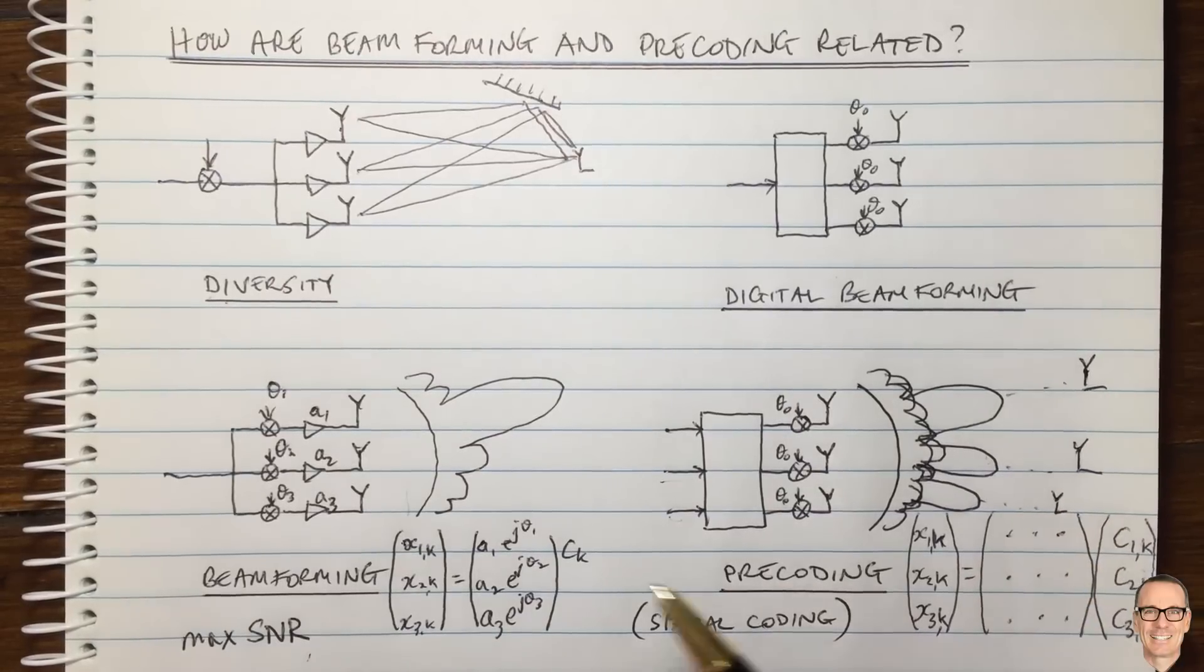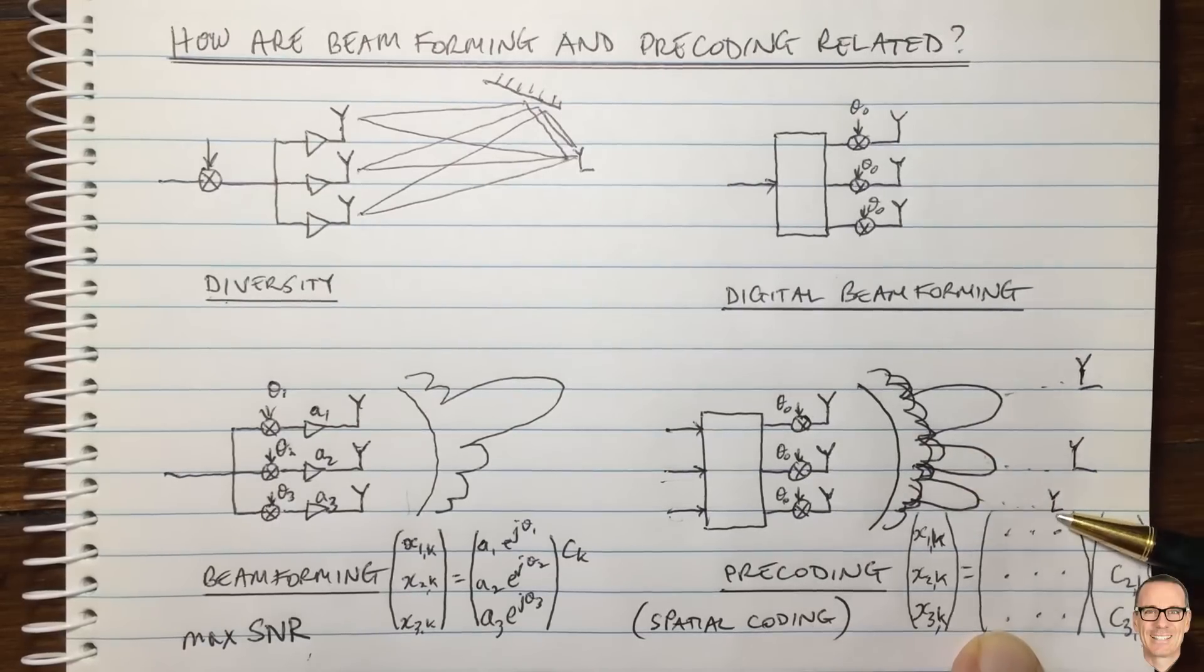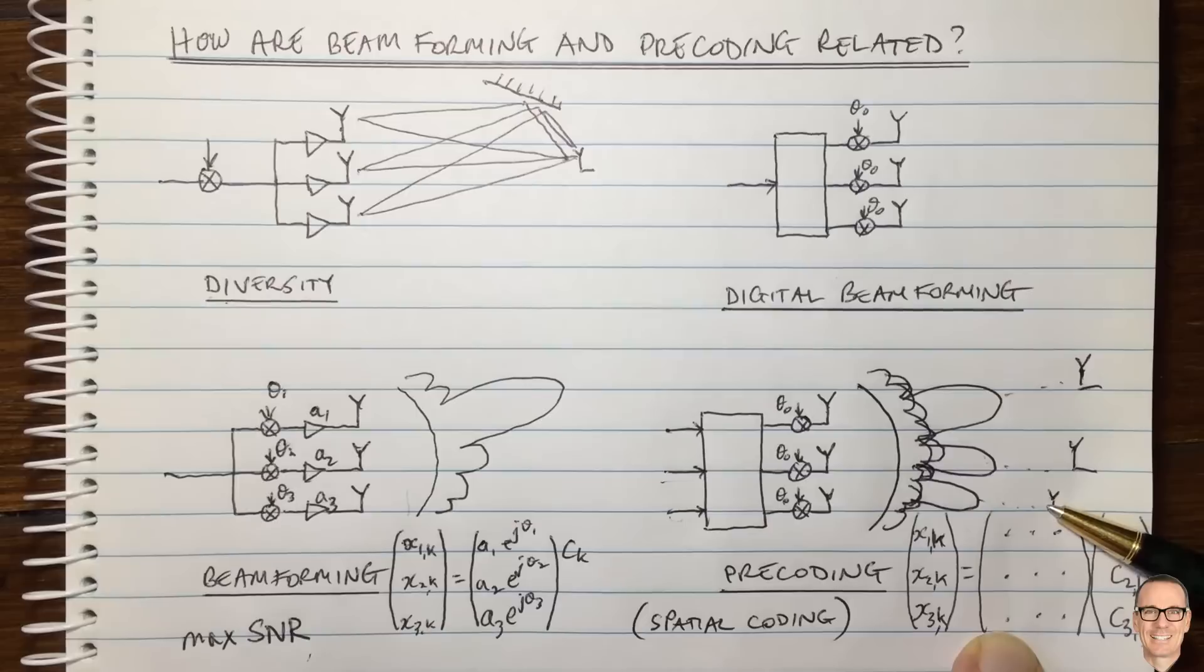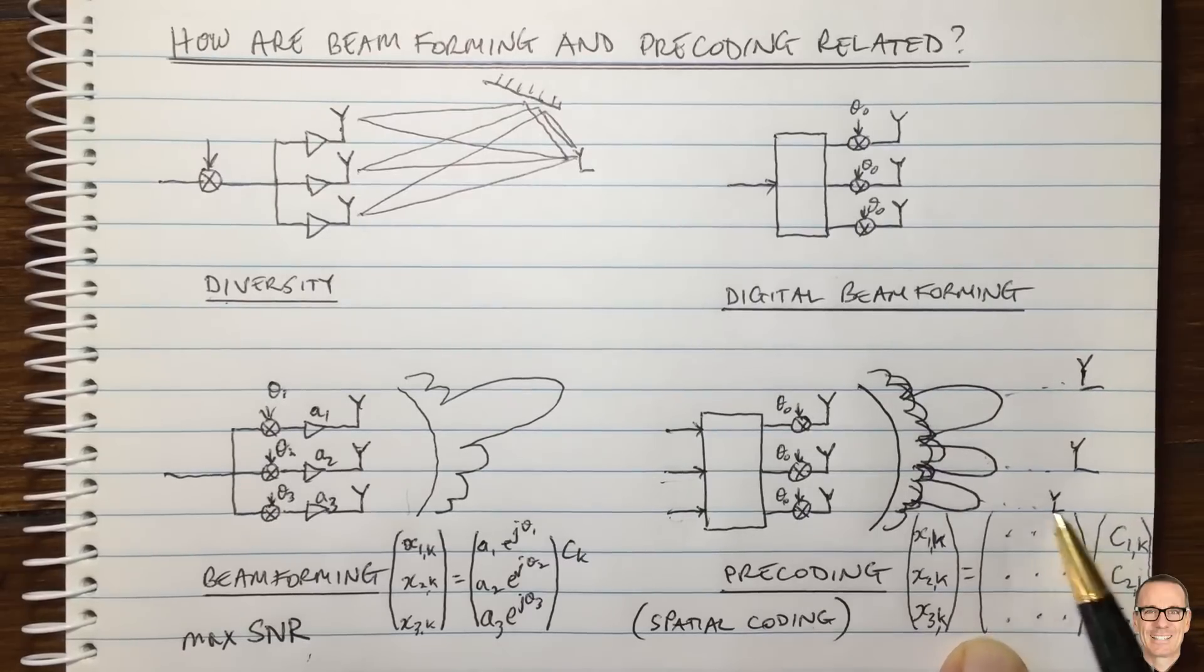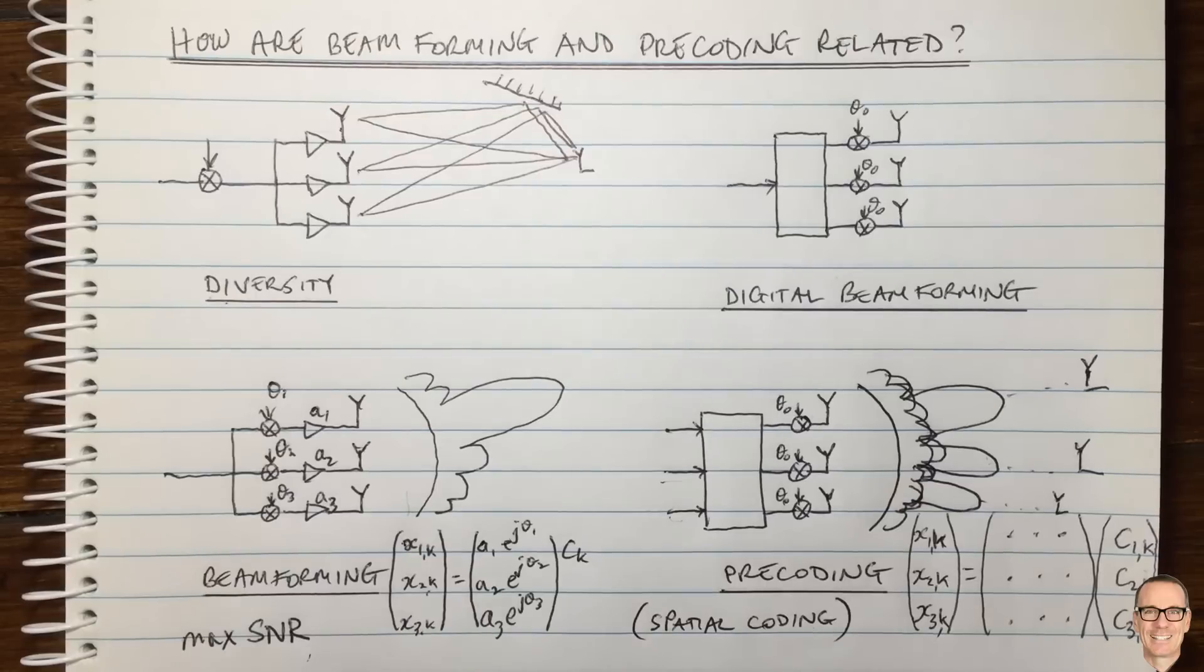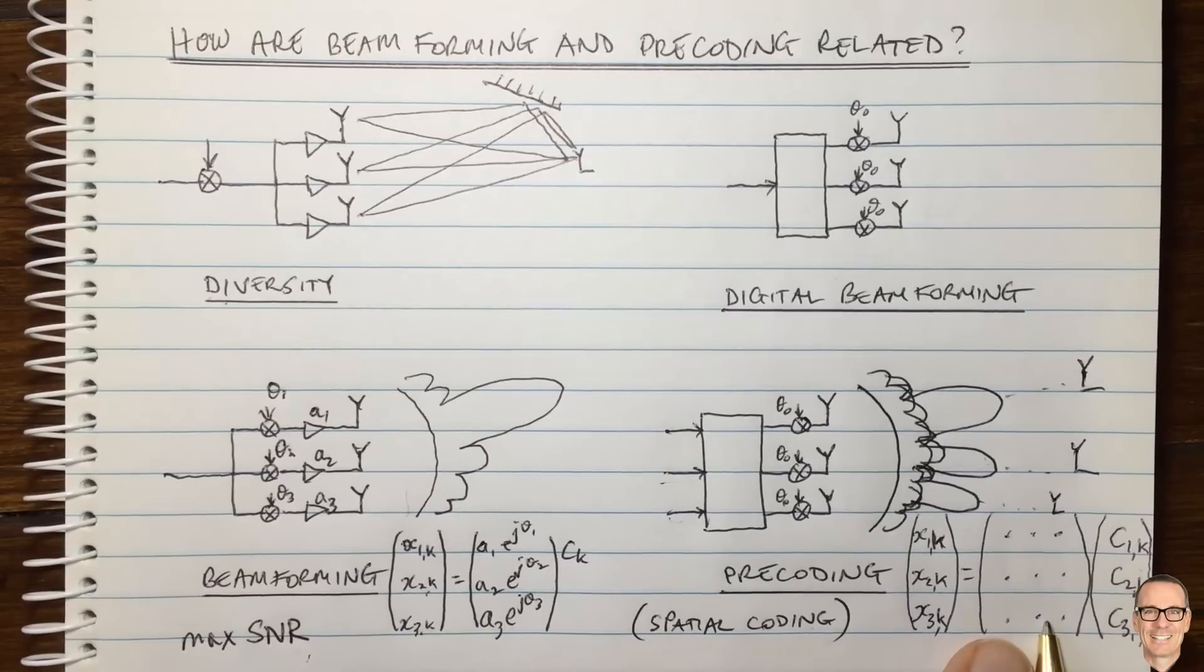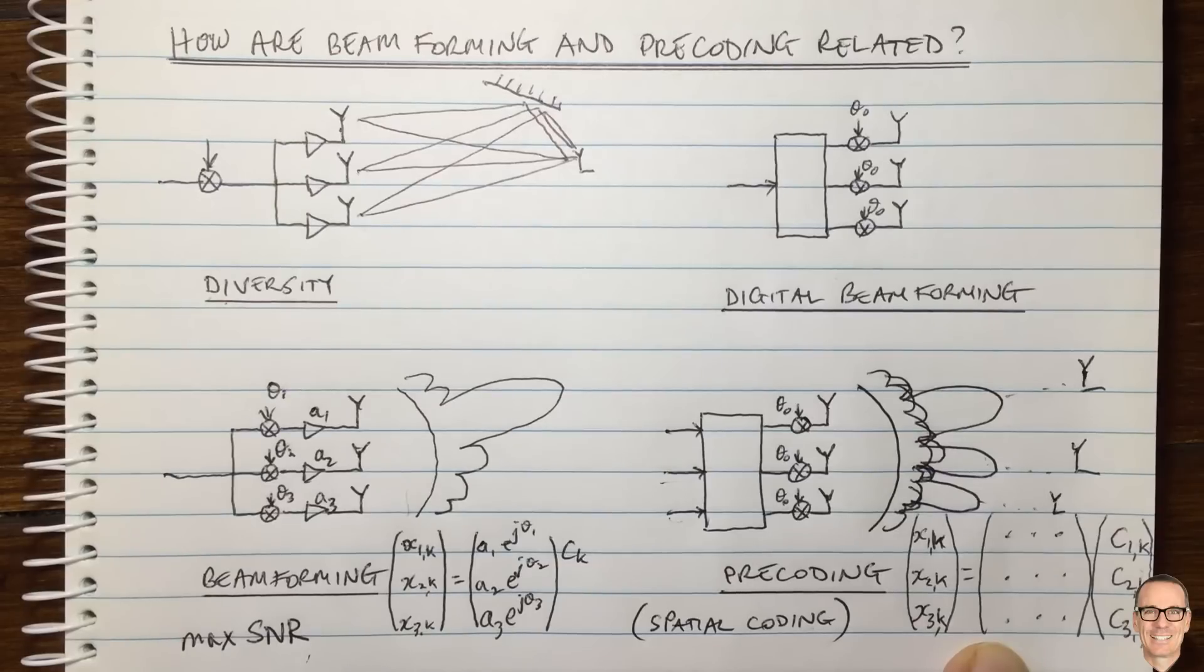You could choose this matrix so that nulls were steered in the directions of the other users for each stream. So this first column, instead of choosing it to maximize the SNR for beamforming, you could choose this first column so that it arranged nulls for stream one in the direction of the other two receivers. It wouldn't be maximizing the SNR, but it would certainly be minimizing the interference to the other users. And if the other streams did likewise, then this would also be an attractive way of choosing this matrix. So sometimes you might want to maximize the signal to noise ratio, but then you're going to have interference. Other times with zero forcing, you can minimize the interference. And of course, you could choose this matrix in a range of other ways, you could minimize the mean squared error, for example. And you could also employ other schemes such as dirty paper coding.